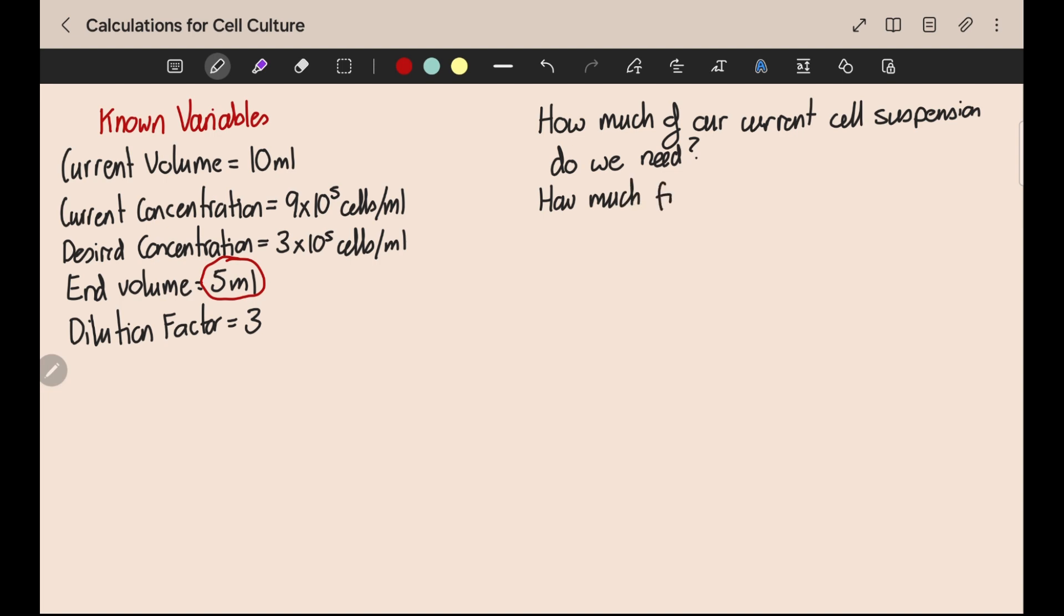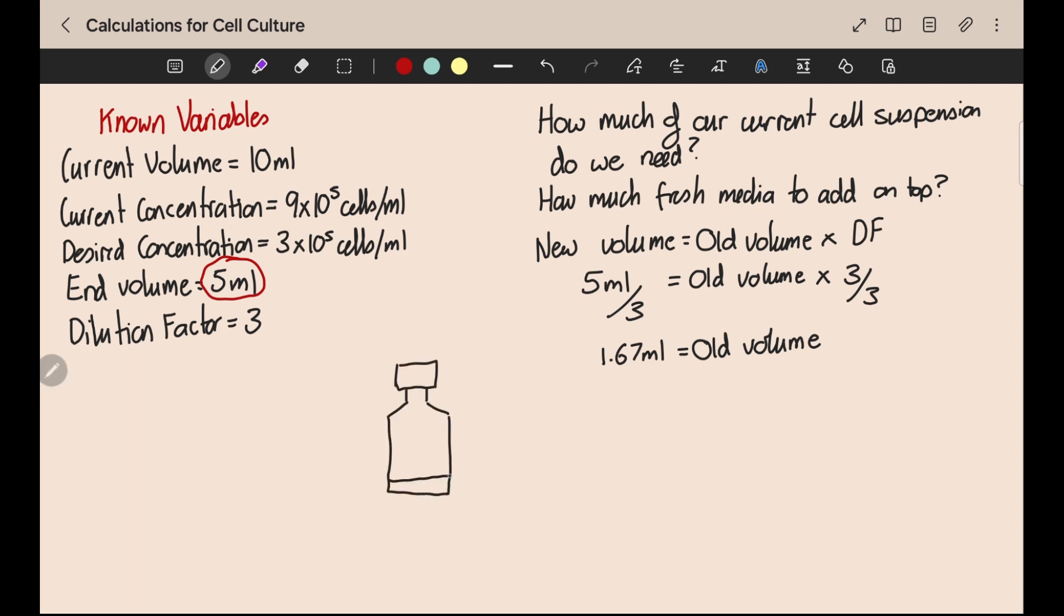This can be calculated by rearranging our equation. The new volume was equal to the old volume times by the dilution factor. In this case we already know that the new volume is going to be 5 mils, so put that into the equation along with the dilution factor. Divide both sides by 3 to get rid of the dilution factor, so you have 5 mils divided by 3, which is about 1.67 mils. So we need 1.67 mils of our current cell suspension.